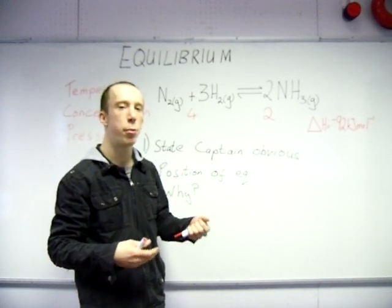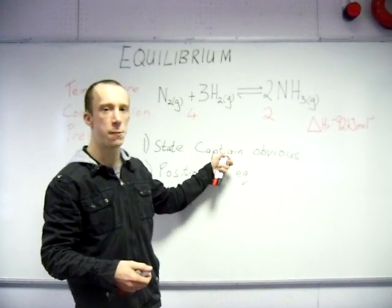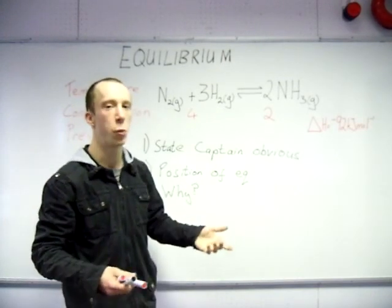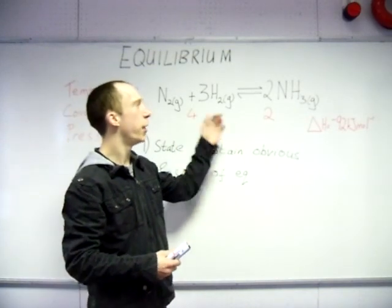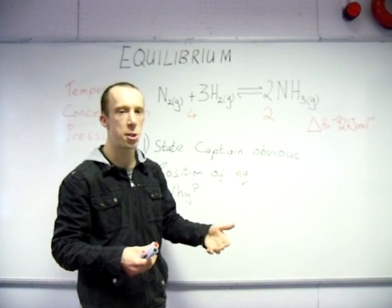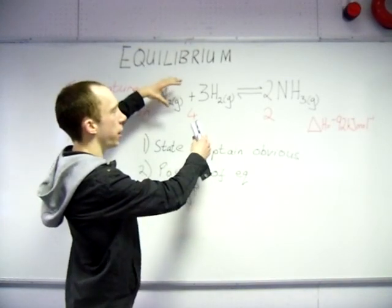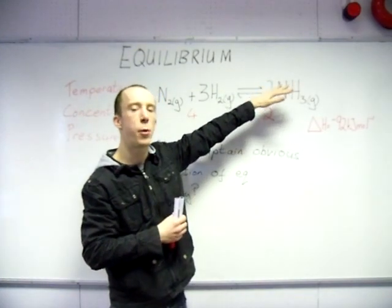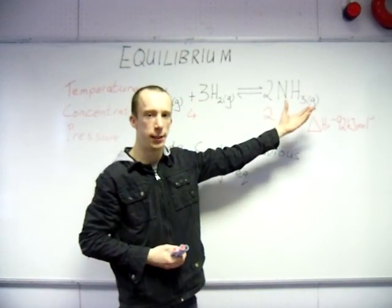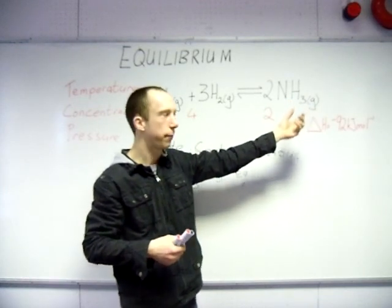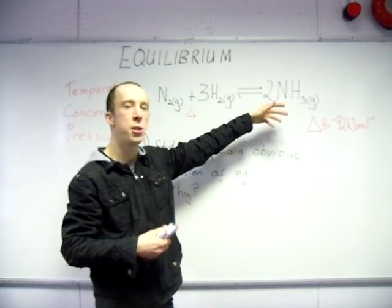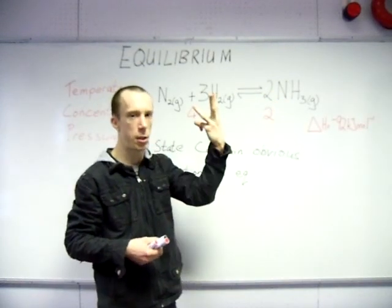So if you were asked the question, what would be the effect of an increase in pressure on the Haber process? State Captain Obvious first. There are more moles of gas on the left-hand side or the reactant side. Literally, you will get a mark for that. Now for the position of the equilibrium, pressure. Le Chatelier's principle, if you increase the pressure, the system will try to decrease the pressure. So if you increase the pressure, the way it does that is it always moves to the side with the fewest gas molecules. In other words, it sticks some of these together and makes fewer gases. So that will reduce the pressure. So the position of the equilibrium in this case, by increasing, will move to the right. And the reason why is to reduce the pressure. Three marks for that. Nice and easy.